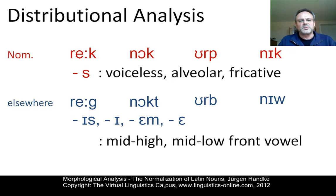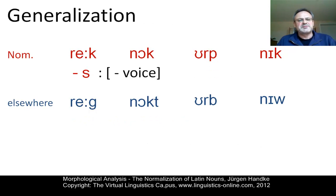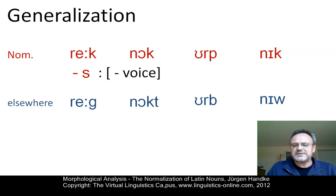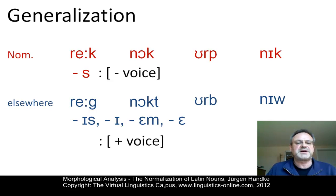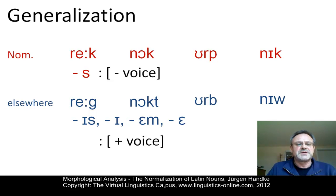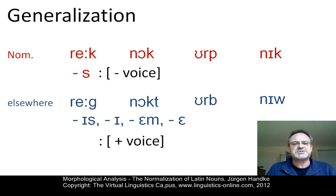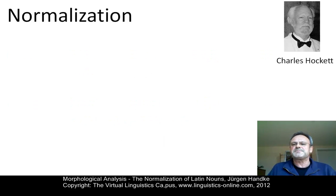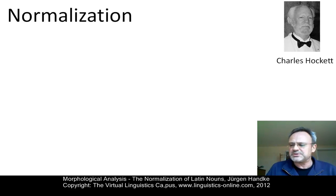Can we generalize this situation? Yes, we can. The final consonant in the nominative cases has the feature minus voice. In all other case forms, a vowel follows, and vowels by definition are normally voiced. So we have a contrast between a voiceless-initial suffix in the nominative and a voiced-initial suffix elsewhere. With this in mind, we can apply a principle first introduced by Charles Hockett, the American linguist, in the mid-1940s, which he called normalization, or more precisely, preliminary normalization.